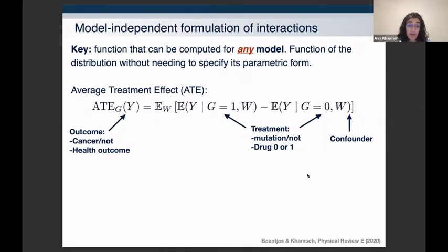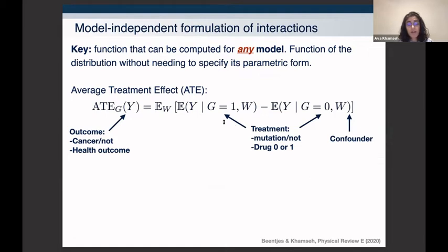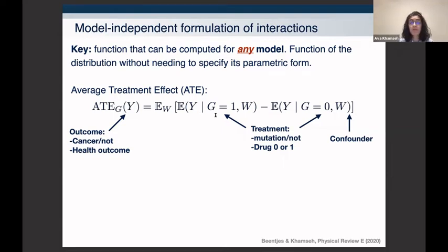The idea comes from biomedical research: the first quantity of its kind is the Average Treatment Effect (ATE), which measures whether a drug has been effective in improving health across a patient population. The equation says: look at the population that didn't receive the drug, look at the population that did, and take the difference — an intuitive measure of drug effectiveness. Crucially, to define this equation we never had to resort to a specific parametric form; it's written entirely in terms of expectation values.